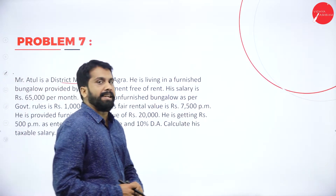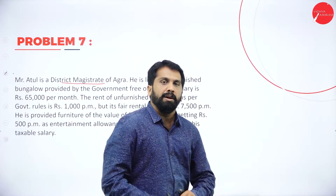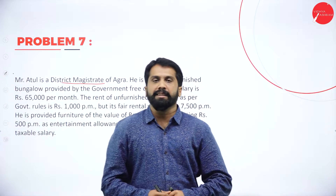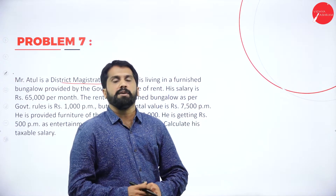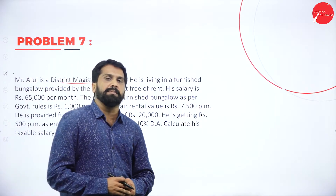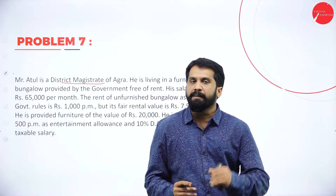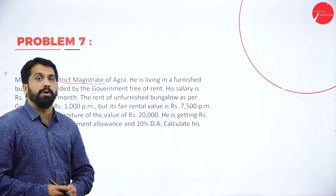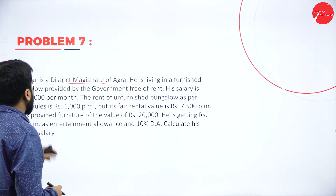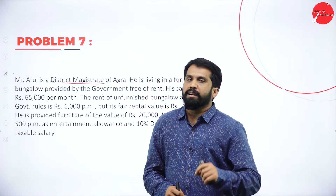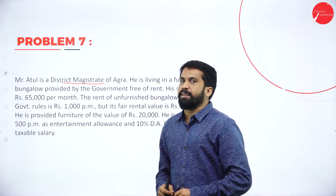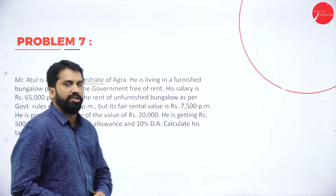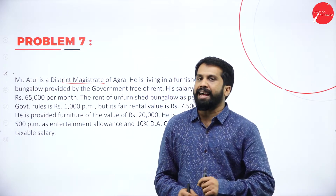For entertainment allowance for a government employee, we have some calculation. Up to 5,000, entertainment allowance is exempted. Or one-fifth of his salary is exempted. Or actual received — whichever is less has to be deducted. Three things: 5,000 is the maximum limit, actual received, or one-fifth of his salary. Out of these three, whichever is less, we deduct from entertainment allowance. Also, 10% DA has to be calculated on salary — if the salary is 1 lakh, 10,000 will be his DA.